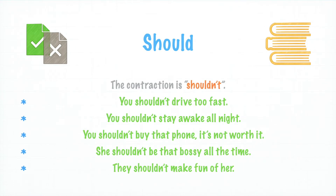The contraction is shouldn't. La contracción es shouldn't. You shouldn't drive too fast. No deberías conducir muy rápido. You shouldn't stay awake all night. No deberías quedarte despierto toda la noche. You shouldn't buy that phone. It's not worth it. No deberías comprar ese celular. No lo vale. She shouldn't be that bossy all the time. No deberías ser tan mandona todo el tiempo. They shouldn't make fun of her. No deberían burlarse de ella.